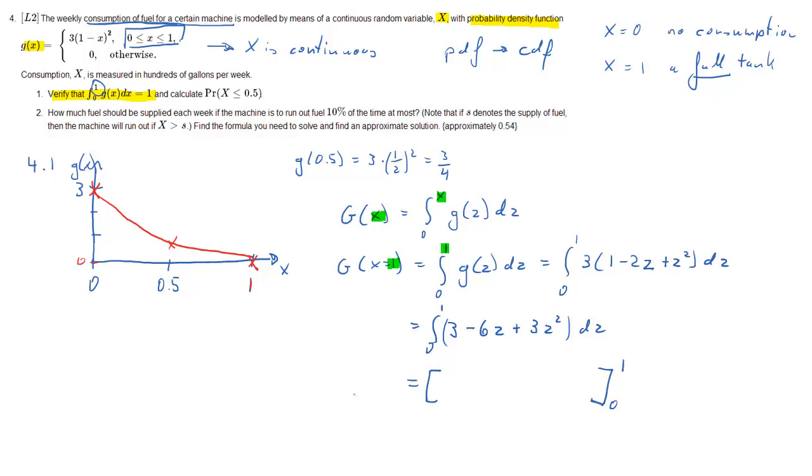So we need to find the function, the derivative of which is the term in the parenthesis. So the derivative of 3z is 3. The derivative of negative 3z squared is negative 6z. And the derivative of z cubed is 3z squared. And then there's a constant in there.